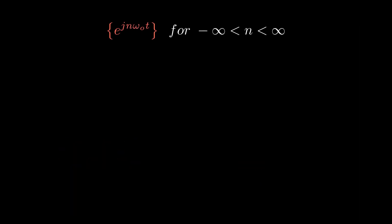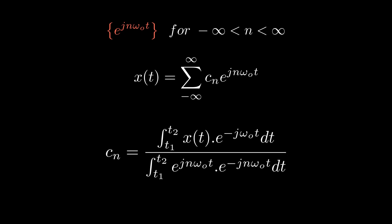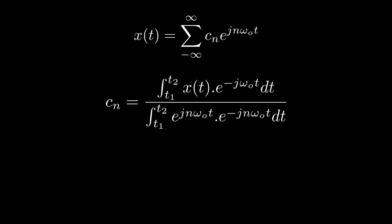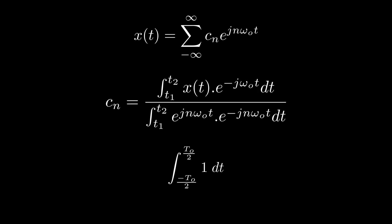Now, knowing that harmonically related complex exponentials form a complete orthogonal set, any arbitrary function x(t) can be expressed as a linear combination of weighted complex exponentials. As in vector space, the coefficients are given by the inner product of the signal and the complex exponential divided by the norm of that complex exponential. Because the complex exponential function is periodic, we find the norm by solving the integral over one period, which gives us T₀, the fundamental period.